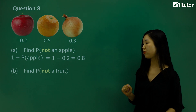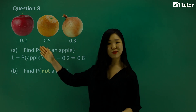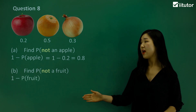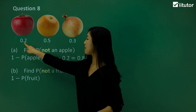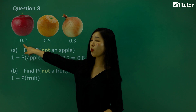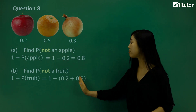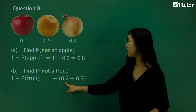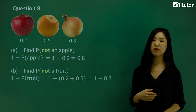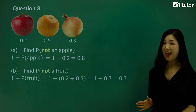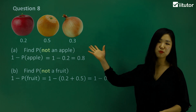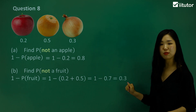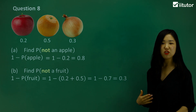Now not being a fruit. Apples and oranges are fruits, but an onion we wouldn't call a fruit. So we do 1 minus the probability of a fruit. Only these two are fruits. The probability of an apple is 0.2 and the probability of orange is 0.5, so we do 1 minus 0.2 and 0.5 added together. 0.2 plus 0.5 is 0.7, so 1 minus 0.7 is 0.3. That's the probability of not a fruit — the same as the probability of an onion.